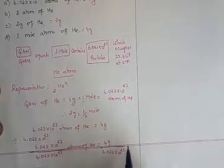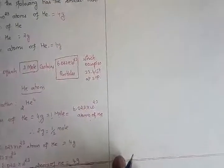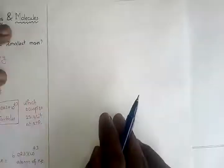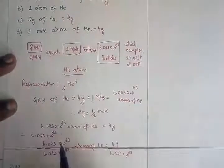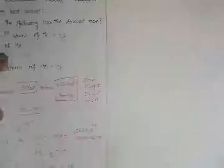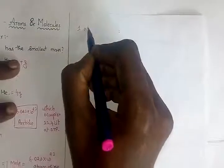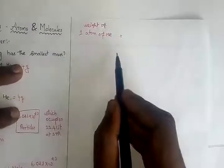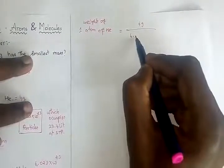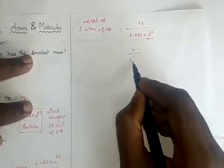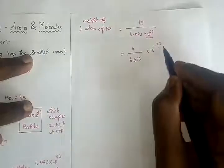When 10²³ moves to the numerator it becomes 10⁻²³, so one atom of helium weighs 4 / 6.023 × 10⁻²³ grams. Now we need to calculate 4 divided by 6.023 to find the numerical value.